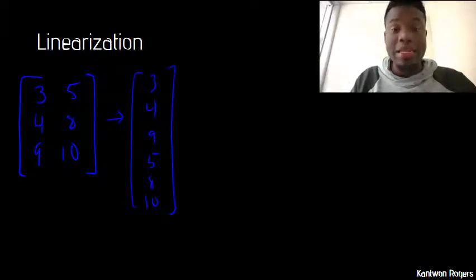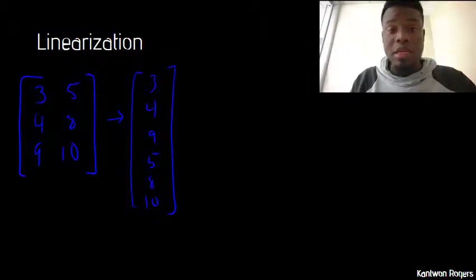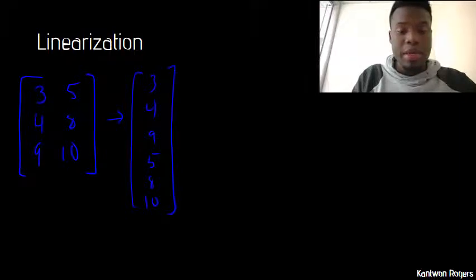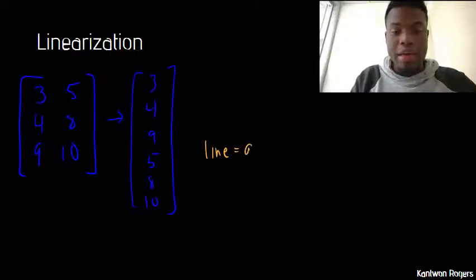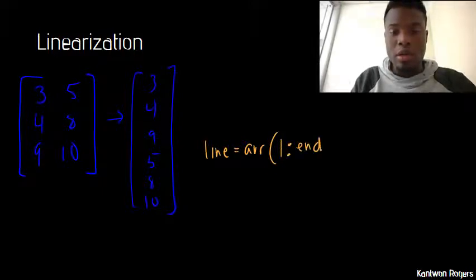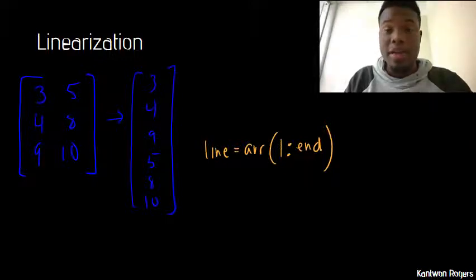And so in terms of indexing, I want to index all of my elements using linear indices. So I can do this by saying, let's call this line for linear. I can have my array, and I want to start at the first one and go all the way to the last one. So I can just say colon end. And in this case here, I'll get a linearized vector of my array.